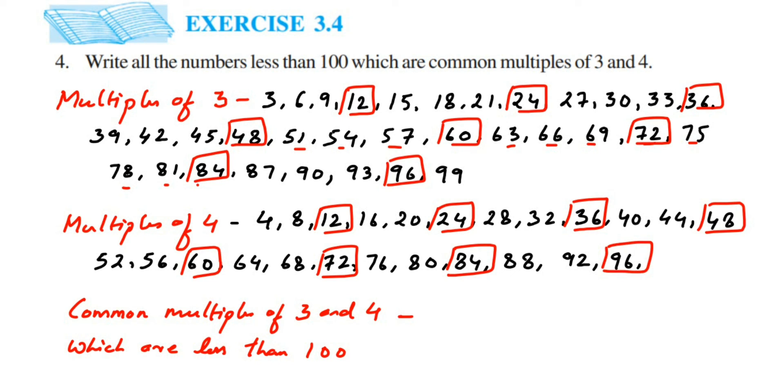Let me write down all the numbers. The common multiples of 3 and 4 less than 100 are: 12, 24, 36, 48, 60, 72, 84, and the last one is 96.